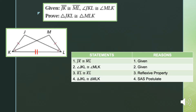For our formal proof: statement one, line segment GK is congruent to line segment ML — given. Statement two, angle JKL is congruent to angle MLK — given. Statement three, line segment KL is congruent to line segment KL by reflexive property. And finally, triangle JKL is congruent to triangle MLK by the Side-Angle-Side (SAS) postulate. QED.